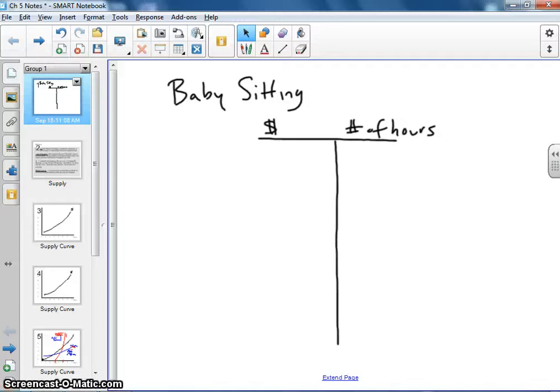As we continue with Unit 2, we are moving into Chapter 5 and taking a look at supply. We talked in Chapter 4 about demand, about consumers and what consumers want, how that curve is put together, the inverse relationship between quantity and price. We are now going to move into the idea of supply, putting ourselves in the shoes of the producer.